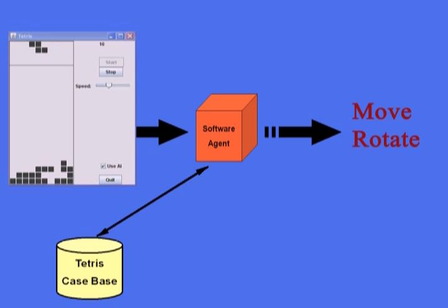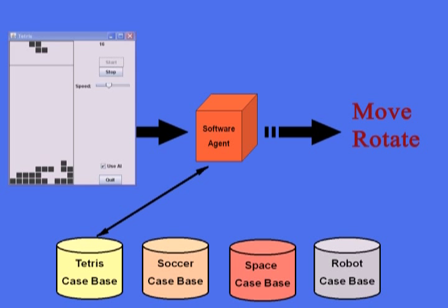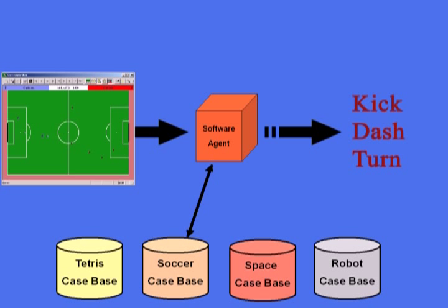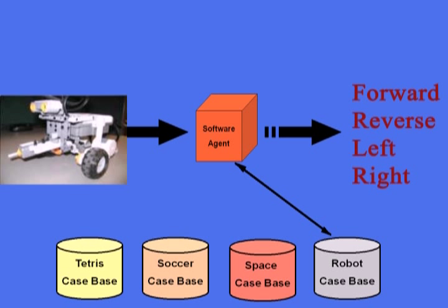When we place the agent in a new domain, like simulated soccer, space combat, or a physical robot, we just need to exchange the Tetris case base for a case base suited for that domain. The key point is that we do not need to make any change to how the agent reasons or provide it with any domain knowledge. We are simply changing the data it reasons with.